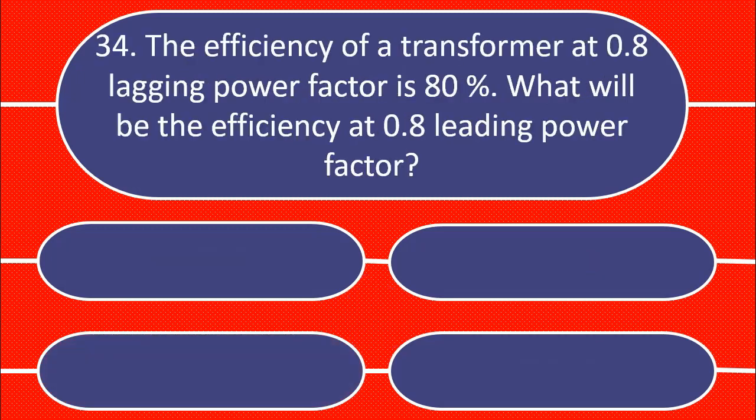The efficiency of a transformer at 0.8 lagging power factor is 80%. What will be the efficiency at 0.8 leading power factor.